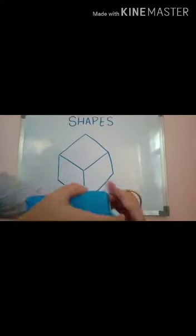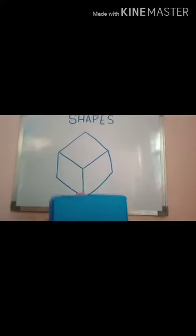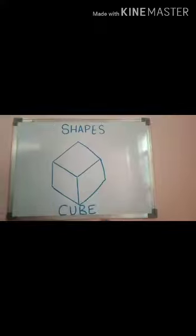And next, edges. A cube has 12 edges. How many edges? Twelve. Let's count: one, two, three, four, five, six, seven, eight, nine, ten, eleven, twelve. How many edges? Twelve edges.